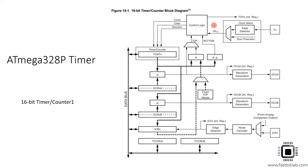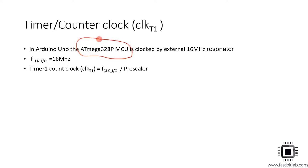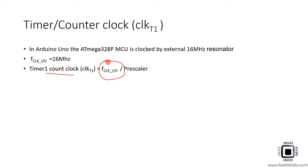Now let's talk about the timer counter clock. In Arduino Uno, the ATmega328P is clocked by an external 16 MHz resonator on the board, used as the main system clock. So we consider f_clock_IO = 16 MHz — this is the terminology used in the datasheet. The timer count clock is derived from this main clock, and you can divide it using a pre-scaler value. By default the pre-scaler is 1, meaning no division.